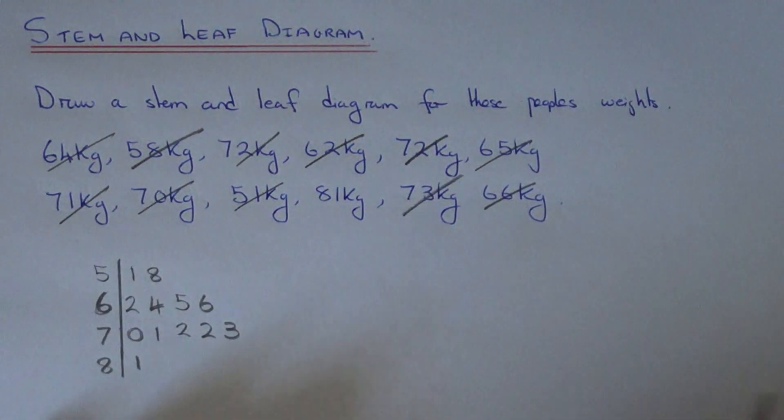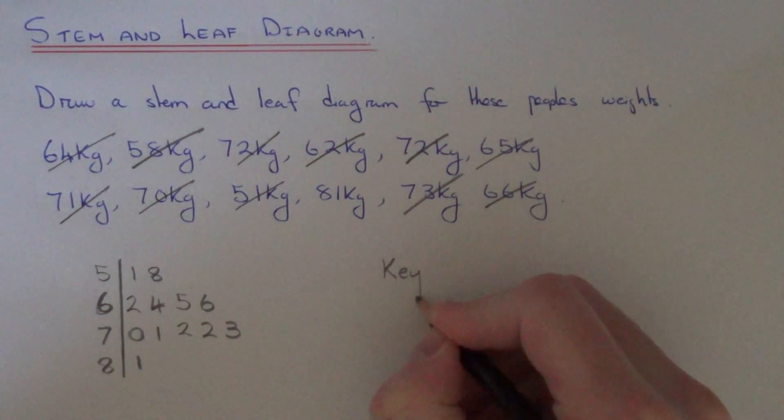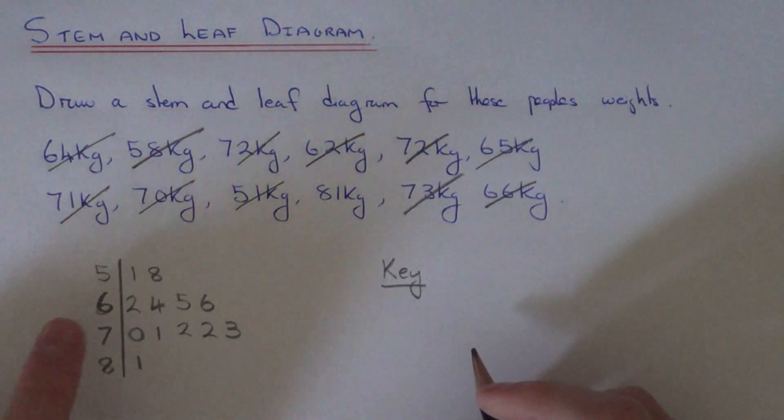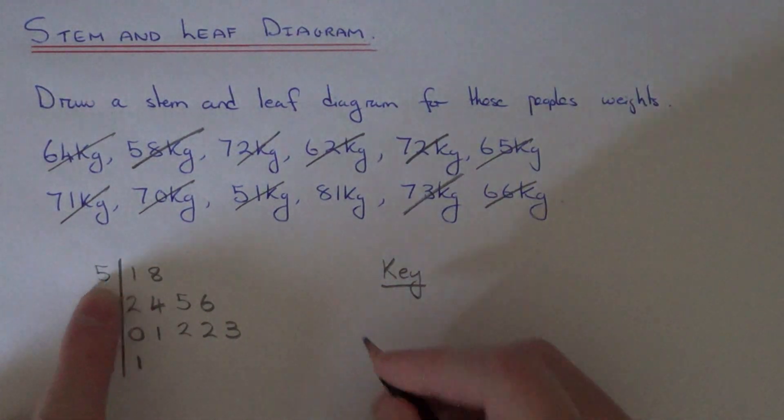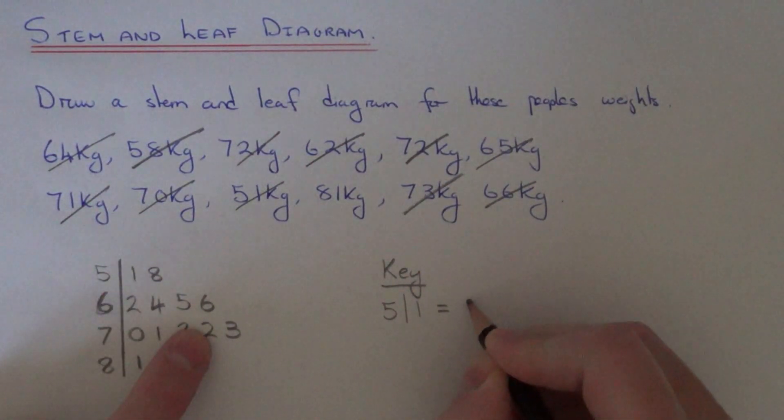The final thing to do with our stem and leaf diagram is to add a key. This just explains what these values mean in the table. The best thing to do is pick out the first number in the table, which is 51. So 5 line 1, what that means is 51 kilograms.